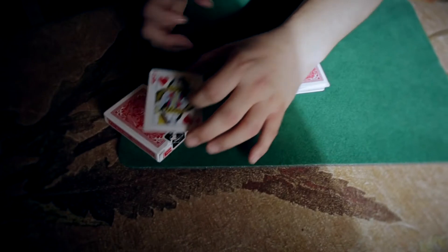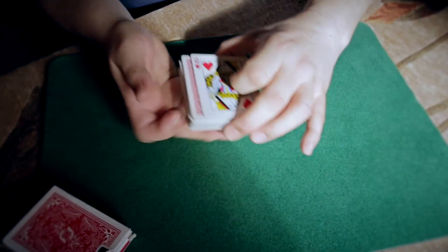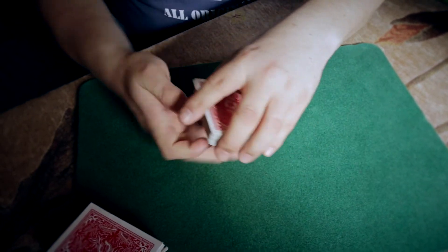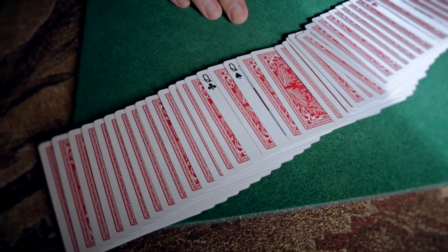Do you remember we started here with the four queens? Watch very carefully. So I place the four queens on top all together. But if I give a cut, watch as I go like that, and they seem to separate out almost instantly.